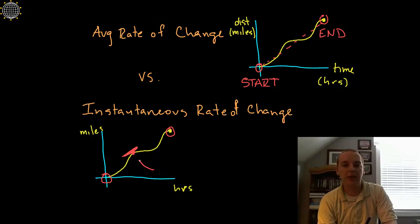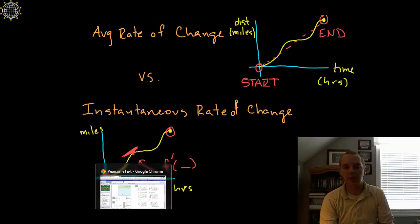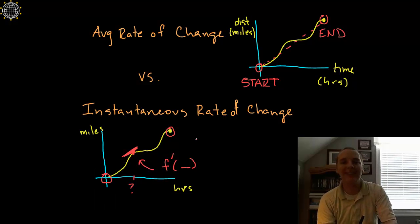Now the way that you would get this would be through using derivatives and like I said if you don't know what that is yet that's okay. You can watch those videos first. But this would be derived from taking the derivative of the function and plugging in whatever the specific time is. And that would give you the instantaneous rate of change.